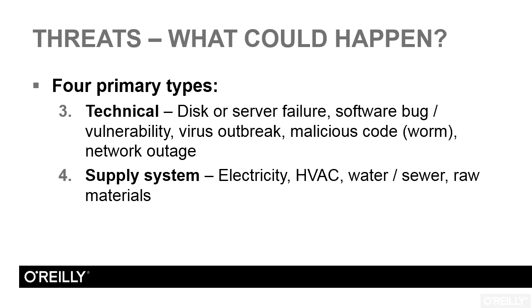At an extreme level, raw materials represent a threat to your supply system. This is typically only considered when we're looking at business continuity and disaster recovery — that's usually the only time the IT security professional deals with raw materials. Business continuity says it's our job to see to it the business never fails. If you can't get a steady supply of a critical raw material, this could impact your organization so severely you might go out of business. Typically, we're focused on electricity for the data center and keeping the work environment habitable so workers can be as productive as possible.